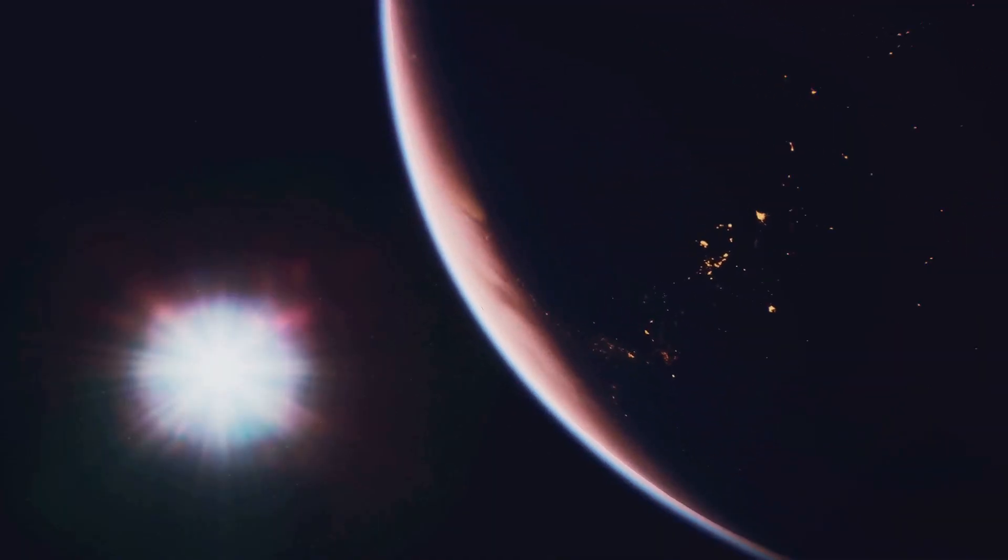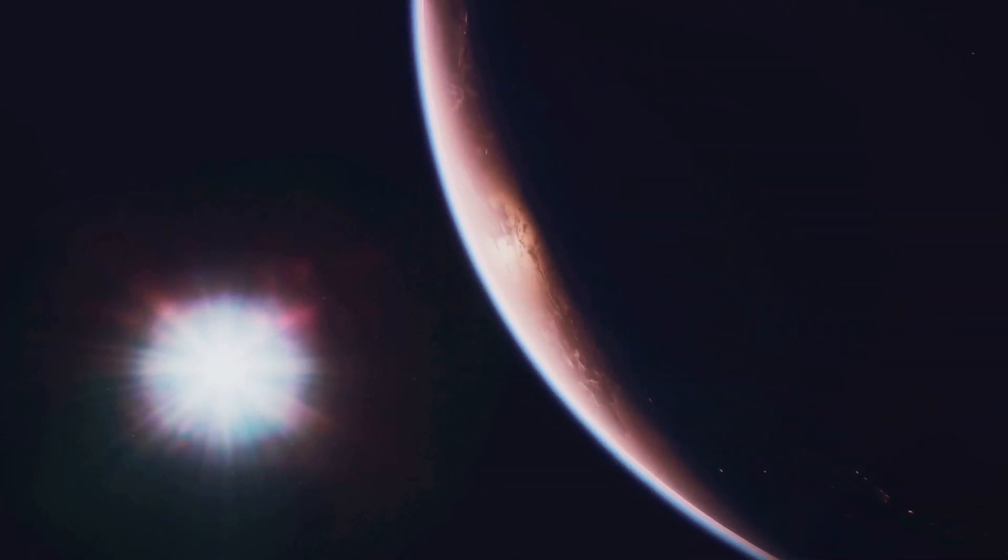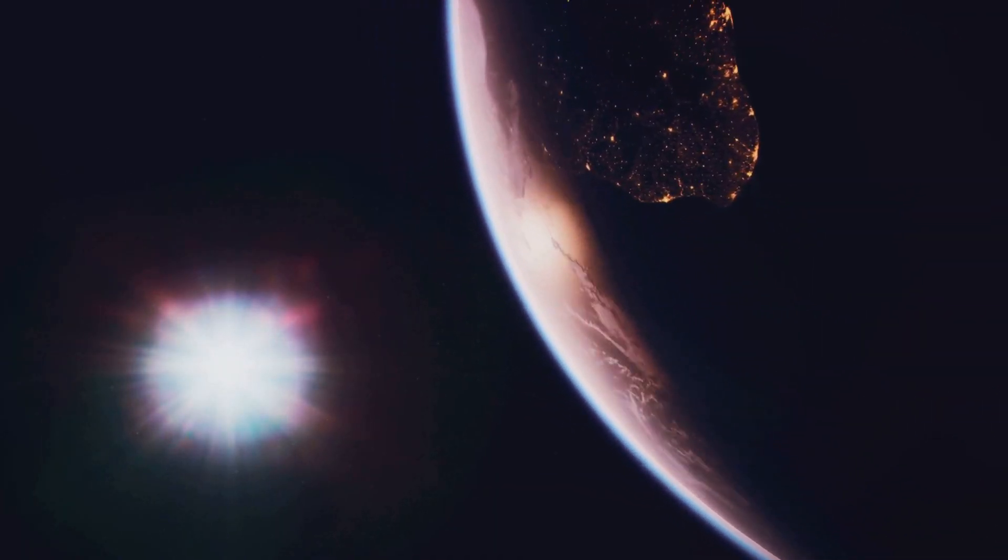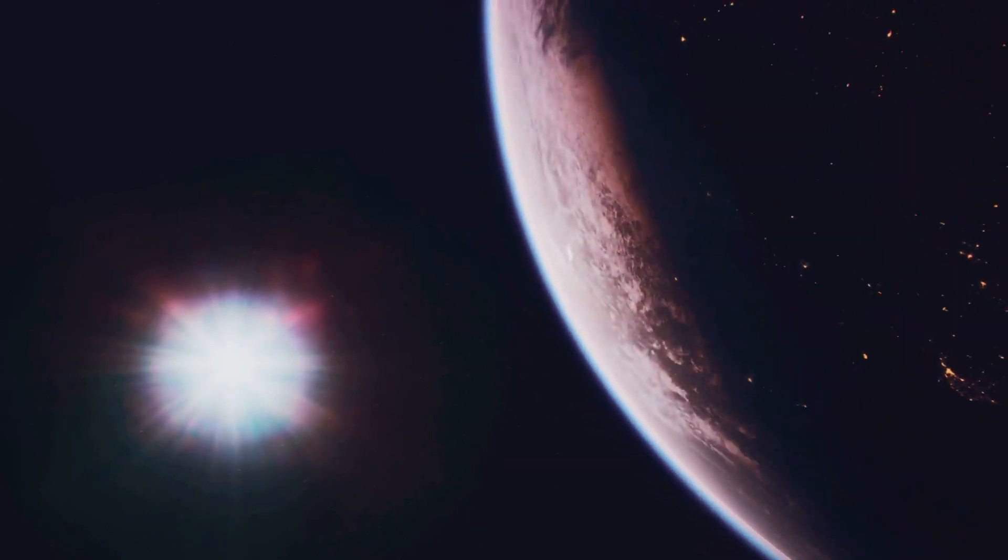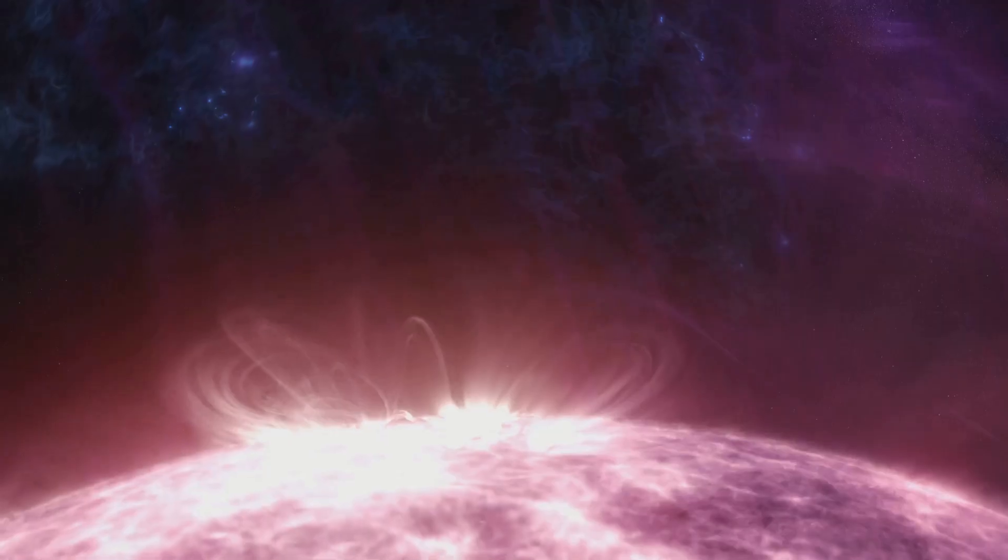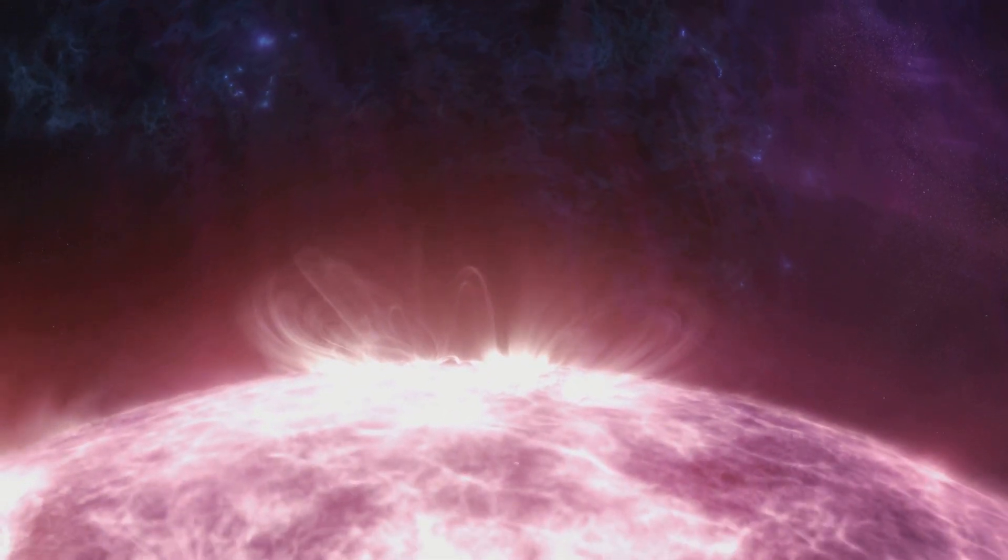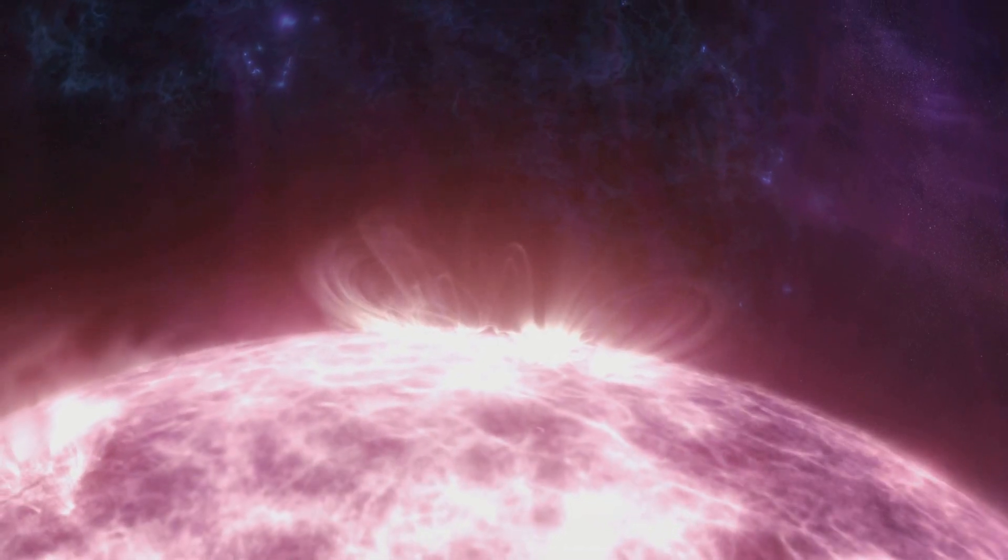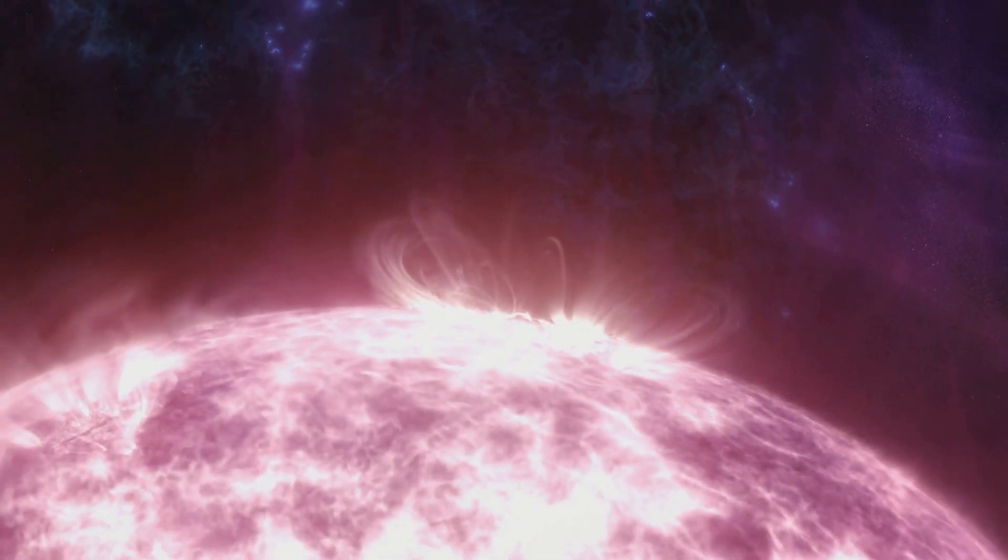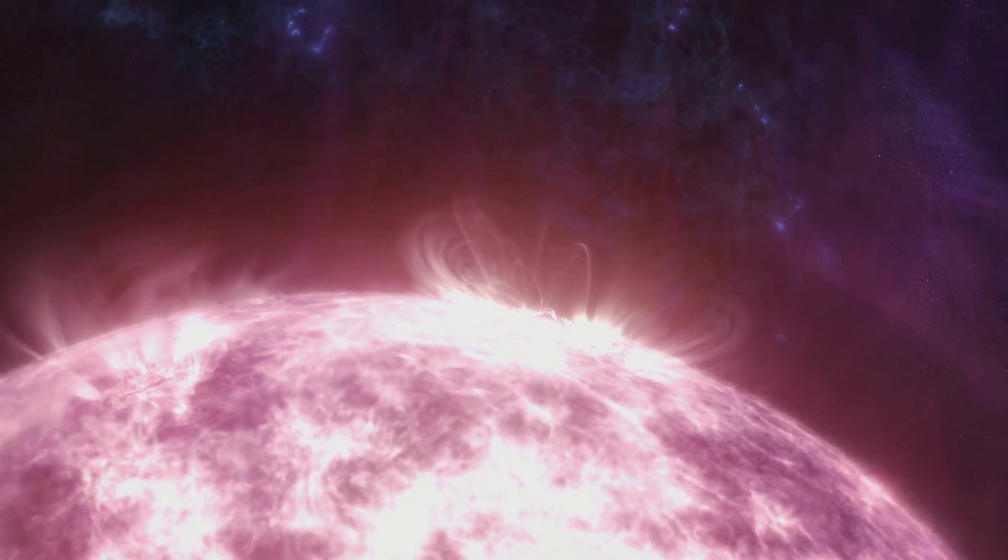Now, let's talk about temperature. Proxima Centauri is a cool star, and by cool, I mean literally cool, at least when compared to other stars. Its surface temperature is about 3,000 degrees Celsius, which is almost 2,000 degrees cooler than our sun. This is why it appears red, as cooler stars tend to emit light more towards the red end of the spectrum.